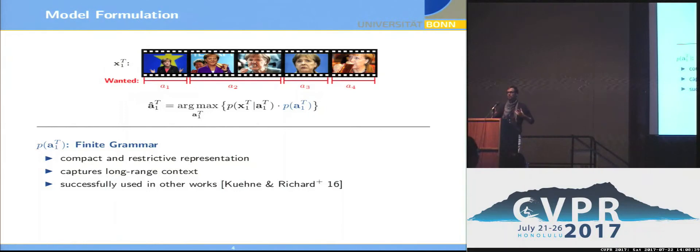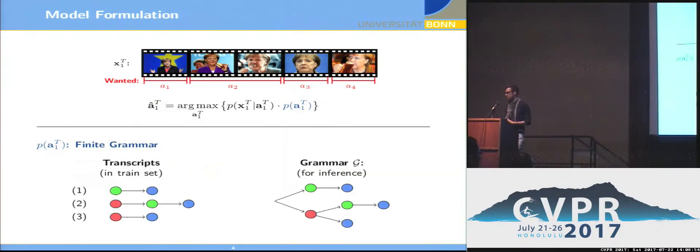So we use a finite grammar to model this with a huge advantage that we cover really from the beginning to the end of the video all the dependencies. For example, if I would take a plate out of a cupboard, would prepare lunch, would clean up the plate, and in the end put it back to the cupboard, it's important to know at the very end of the video that I took it out at the very beginning. So a finite grammar covering the whole sequence is quite beneficial here.